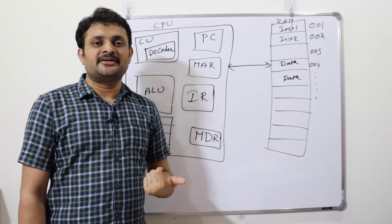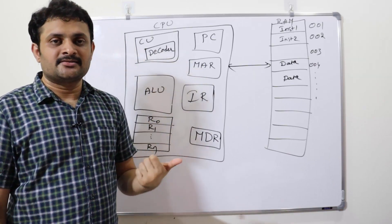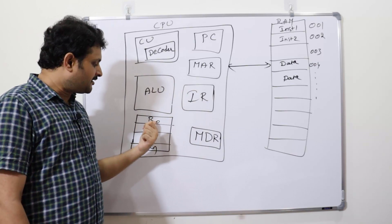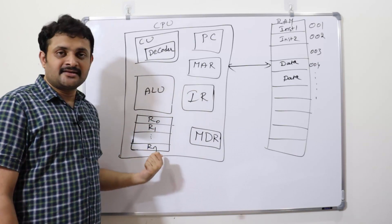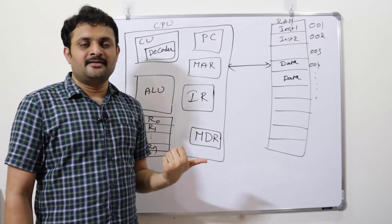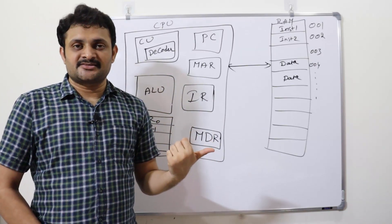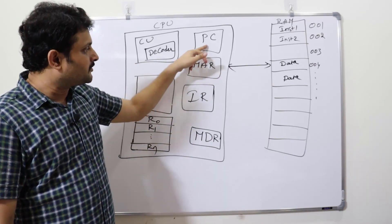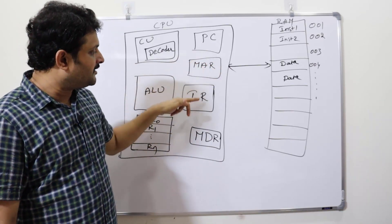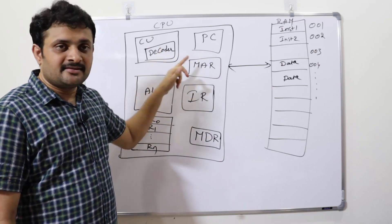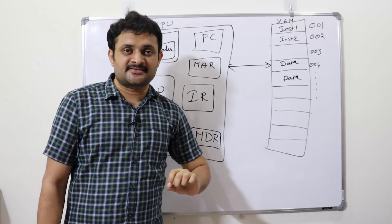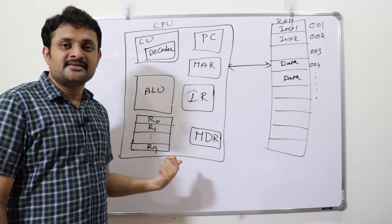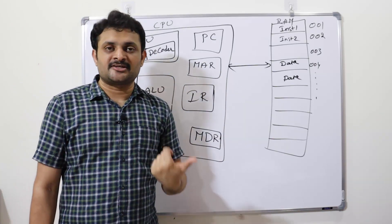Whenever there are temporary values to hold, those can be stored in the general purpose registers — R0, R1, up to Rn. Program counter, MAR, IR, and MDR are all called special purpose registers, while R0, R1, R2 through Rn are called general purpose registers.